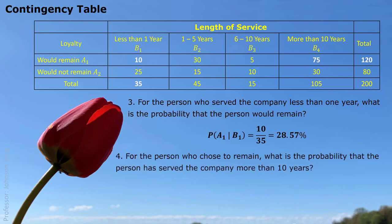Question 4: for the person who chose to remain — clearly another condition. We only consider those people who answered yes, which is 120 people. We are not talking about 200 people, but these 120. What is the probability that the person has served the company more than 10 years? 75 divided by 120 gives us 62.5%. This is also conditional probability.